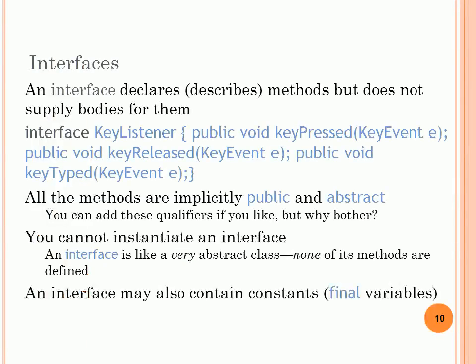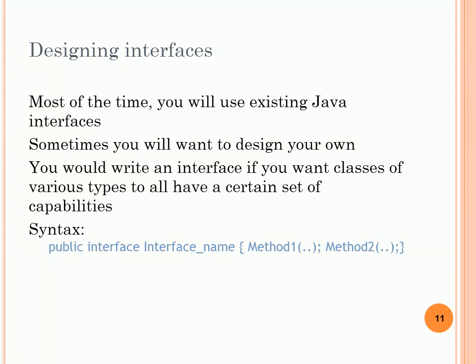Let's move to another important concept in object-oriented programming: interfaces. An interface declares methods but does not provide bodies for them. A famous predefined interface in Java is the KeyListener. All methods in interfaces are implicitly public and abstract. You cannot instantiate an interface, just like with abstract classes. However, in an interface all methods must be abstract — in an abstract class, one abstract method is sufficient. An interface may also have data, but it must be constants; in Java we use the keyword 'final'.